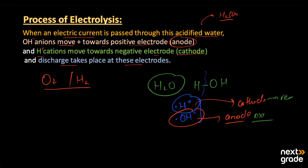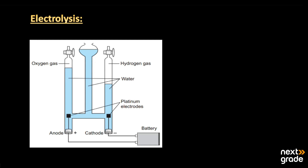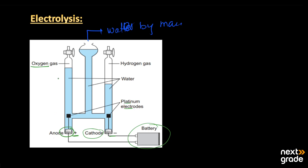Here we have a simple description along with the electrolytic cell used to demonstrate the decomposition of water. It consists of two electrodes: the anode with positive charge and the cathode with negative charge, with a battery source attached. The electrodes used may be of platinum. At the anode, oxygen gas is produced by the process of oxidation, and at the cathode, hydrogen gas is produced by the process of reduction.